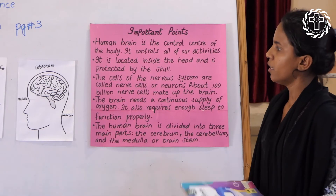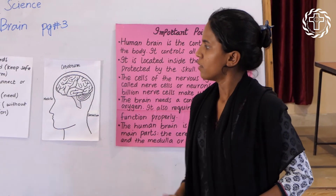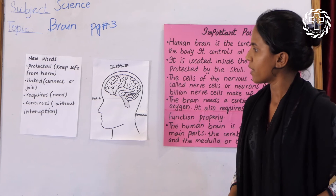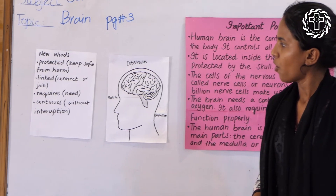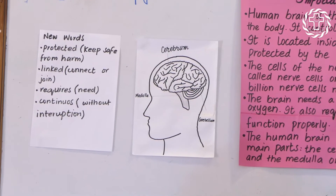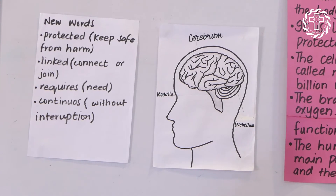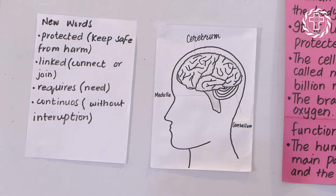New words: 'protected' means keep safe from harm or injury; 'linked' means connect or join; 'requires' means need; 'continuous' means without any interruption.